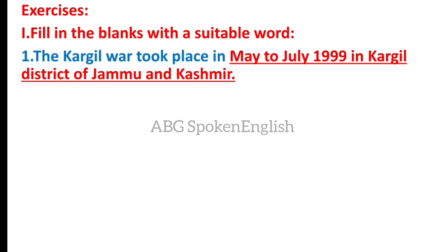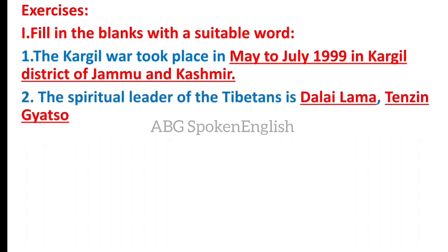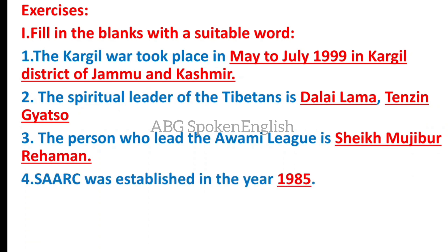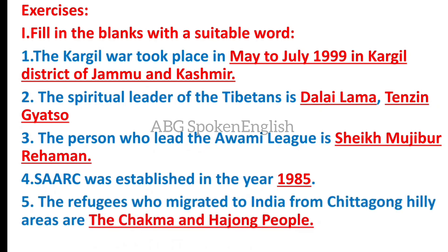Jammu and Kashmir. The spiritual leader of the Tibetans is the Dalai Lama, Tenzin Gyatso. The person who led the Awami League is Sheikh Mujibur Rahman. SAARC was established in the year 1985. The refugees who migrated to India from Chittagong's hilly area are the Chakma and the Hajong people.